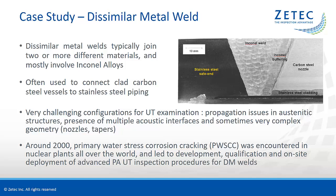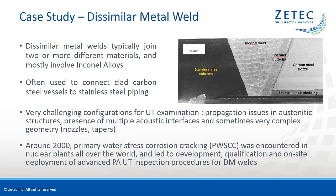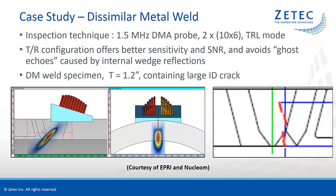Around the year 2000, a new damage mechanism called Primary Water Stress Corrosion Cracking, or PWSCC, was encountered in nuclear plants all over the world, and led to the development of advanced phased array inspection procedures for dissimilar metal welds. ZTECH collaborated with EPRI in 2005 to formally qualify the first phased array procedure for in-service inspection of DM welds. Qualified inspection techniques are typically based on 1.5 MHz dual 2D matrix array probes generating L waves for better propagation in the coarse-grain austenitic material. The dual transmit-receive configuration offers better sensitivity and signal-to-noise ratio.